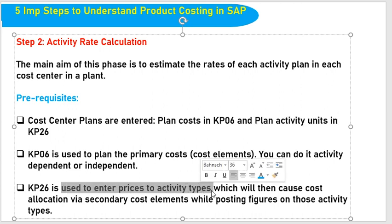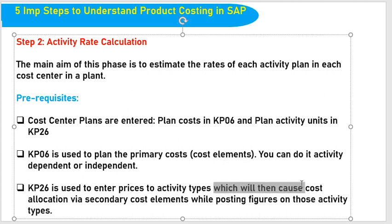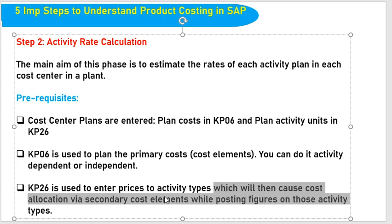KP26 is used to plan activity units. It is used to enter activity types, which will then be allocated cost-to-cost via secondary cost elements. KP26 is used to enter activity types because this involves indirect costs — machine, labor, overhead — these are indirect costs and secondary costs. Cost-to-cost allocation occurs via secondary cost elements while posting figures on those activity types.